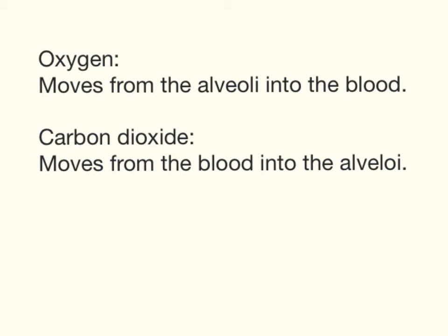So in summary, to spell it out really clearly: for oxygen, it moves from the alveoli into the blood. For the carbon dioxide, it moves from the blood into the alveoli. The oxygen is going from the alveoli into the blood because there's a lot of it in the alveoli and less of it in the blood, and for the carbon dioxide it's the opposite way around. Hope that's clear — thanks everyone, see you later!